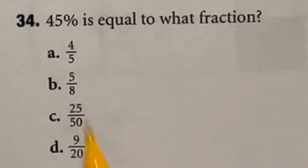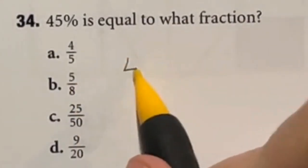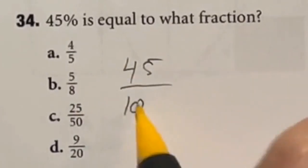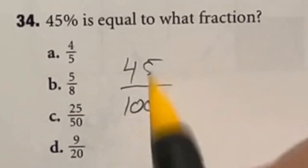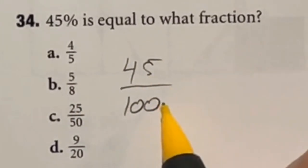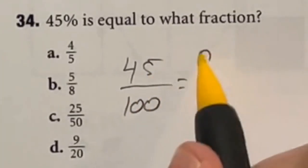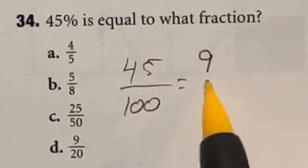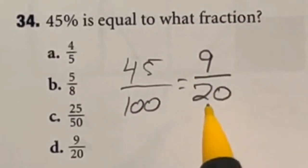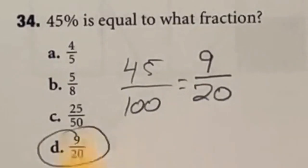45% is equal to what fraction? Well, 45% is essentially the same thing as 45 over 100. So what we're looking at here is a number that divides both of them. Because it ends in a 5 and 0, I'm going to start with just dividing by 5 because I know those easily. 45 divided by 5 is going to give me 9, and 100 divided by 5 is going to give me 20. Looking at our answers, that's already answer D, so we're good to go.